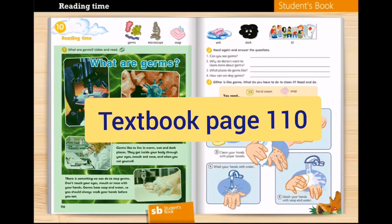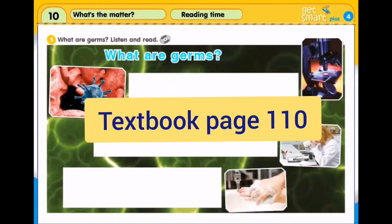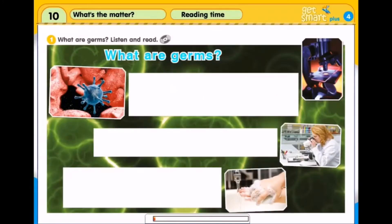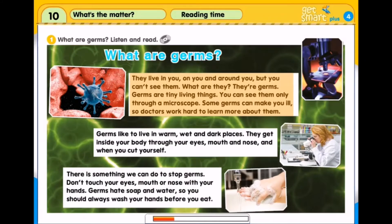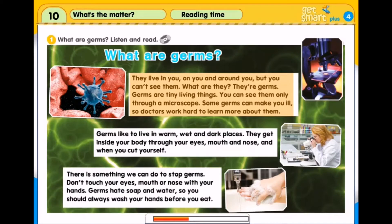Textbook page 110, number 1. What are germs? Listen and read. What are germs? They live in you, on you, and around you, but you can't see them. What are they? They're germs. Germs are tiny living things. You can see them only through a microscope.